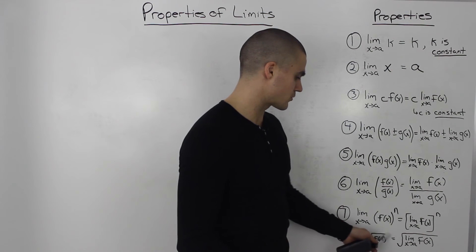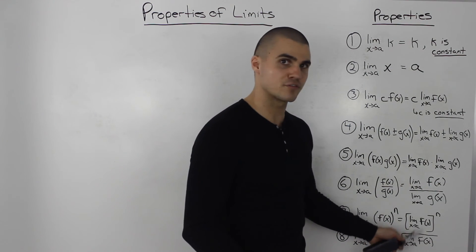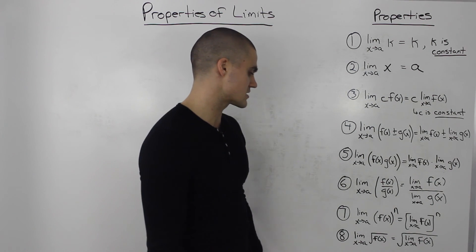The limit as x approaches a of the square root of a function. Take the limit of the function first and then square root your result and you'll get the same thing.